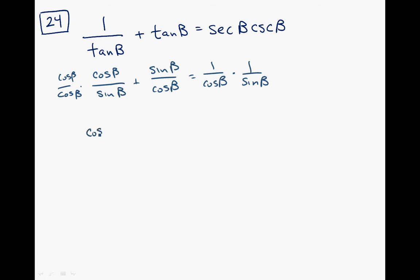This first one is going to turn into cosine squared beta over cosine beta sine beta. And the second one is going to turn into sine squared beta. I'm getting excited about this possibility to use a Pythagorean identity here. Let me finish writing this out.